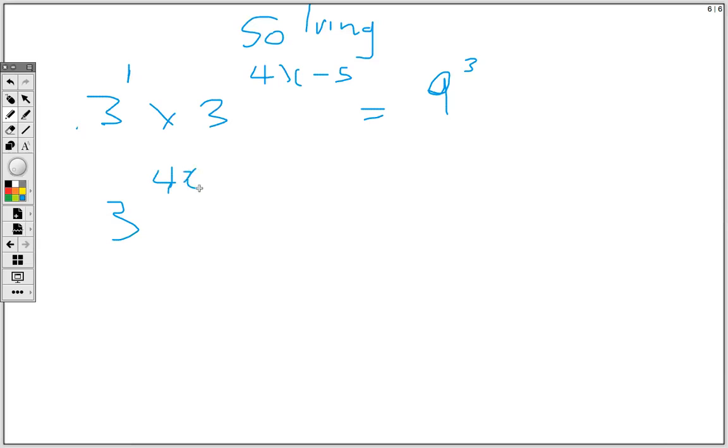So we have 3 to the 4x, so we have 3 to the 4x plus 1 minus 5, that is negative 4. 9 is the same thing as 3 squared. And we know from indices, when we have 2 powers, we can multiply, so 3 to the 6.